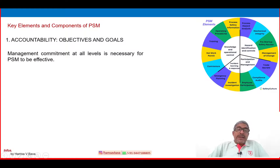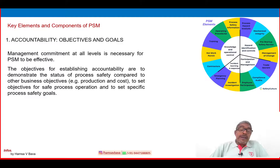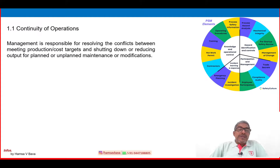Management commitment at all levels is necessary for PSM to be effective. The objectives for establishing accountability are to demonstrate the status of process safety compared to other business objectives like production, cost management, and quality improvement. This includes setting objectives for safe process operation and specific process safety goals supported by appropriate resources.